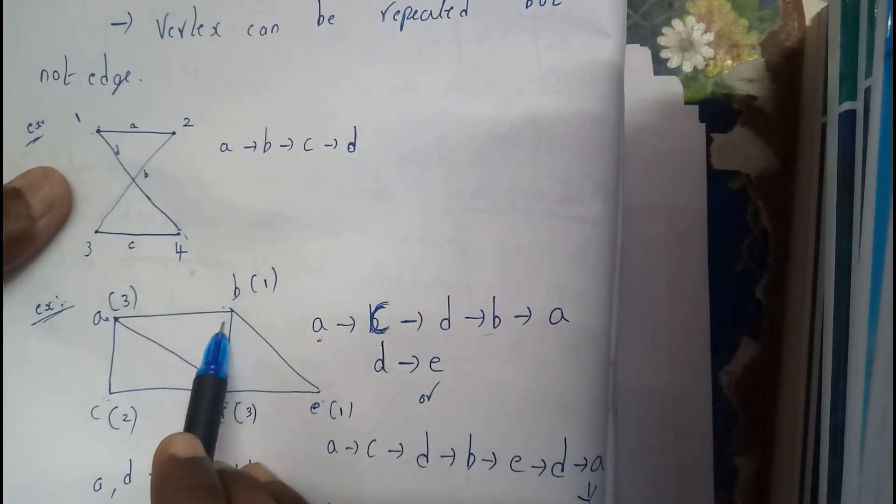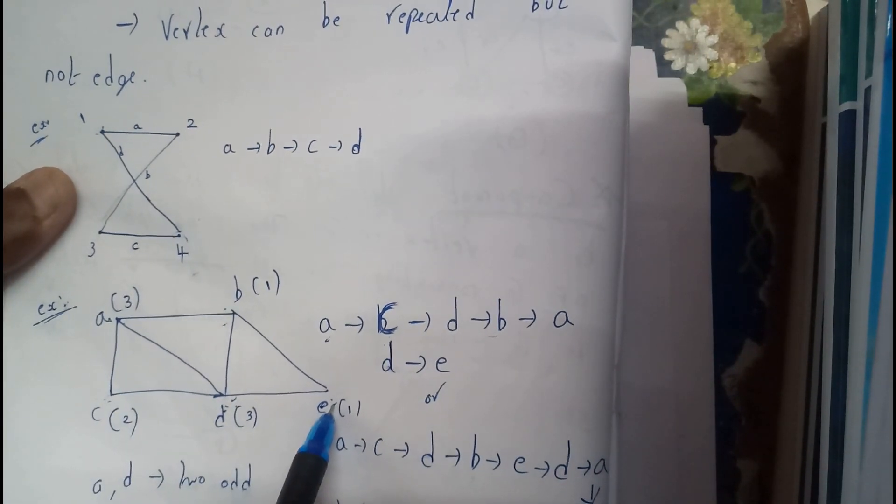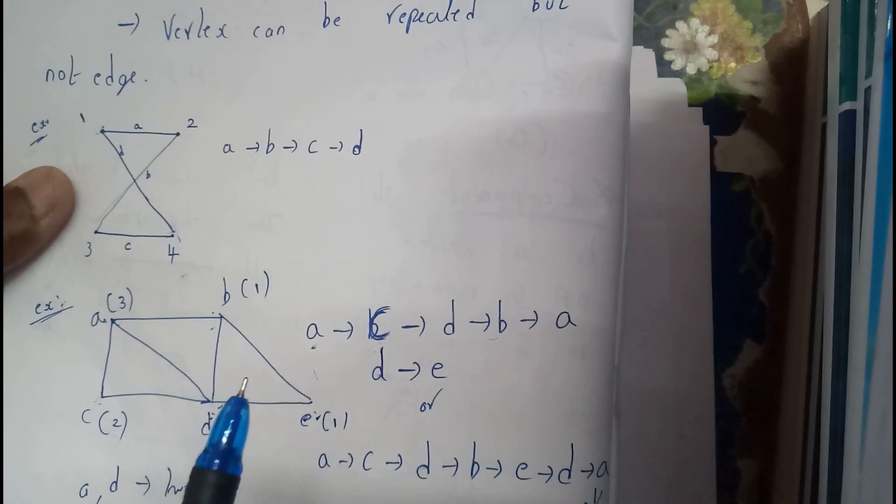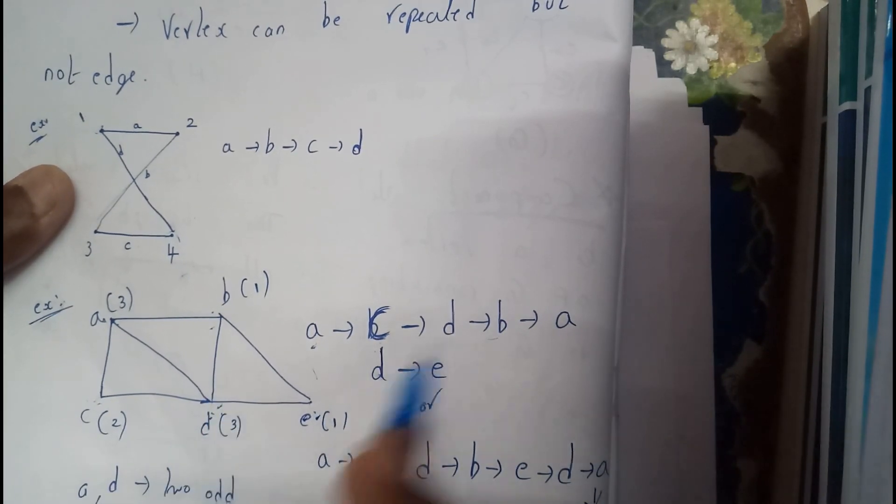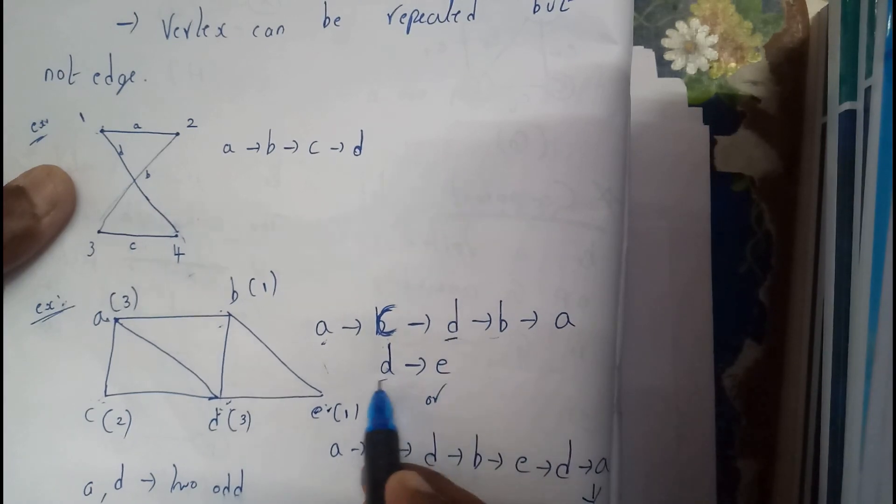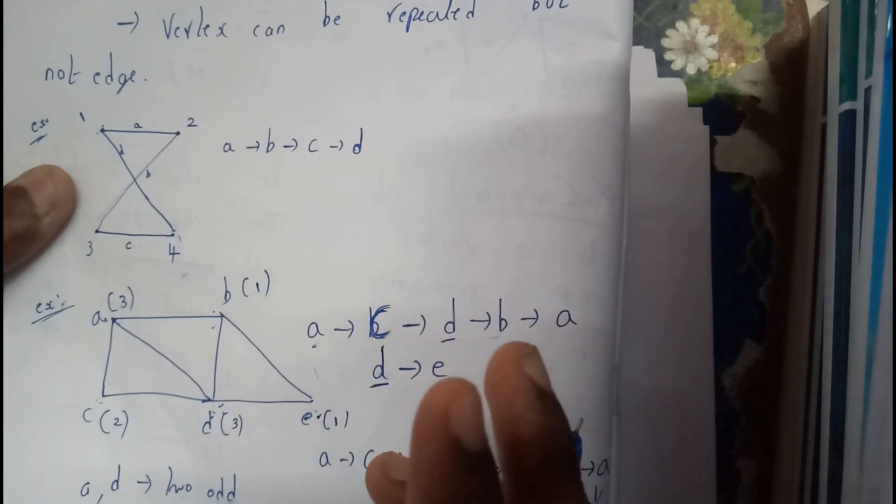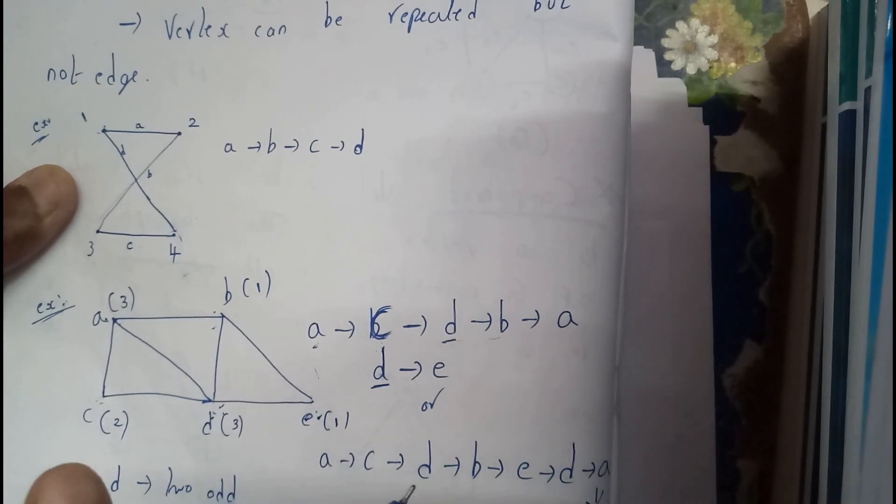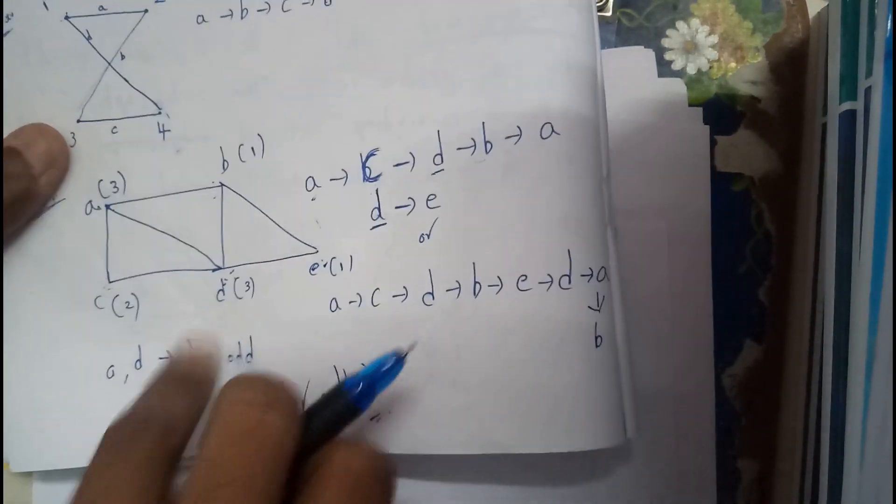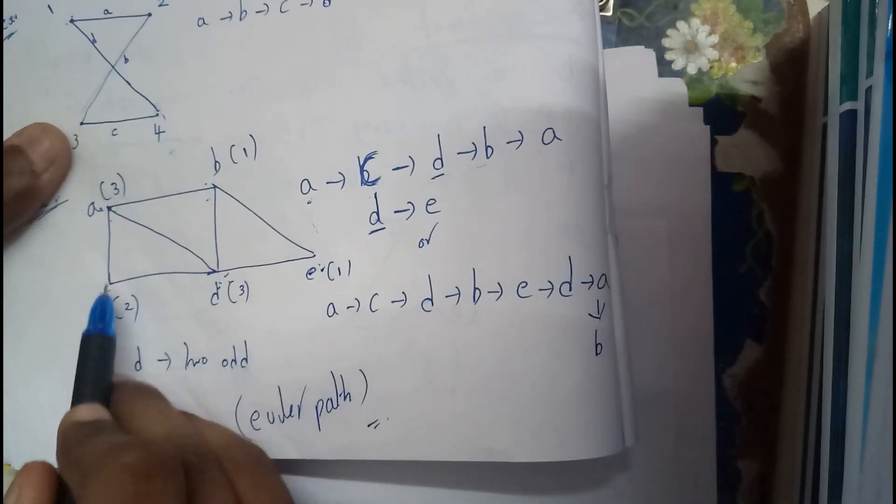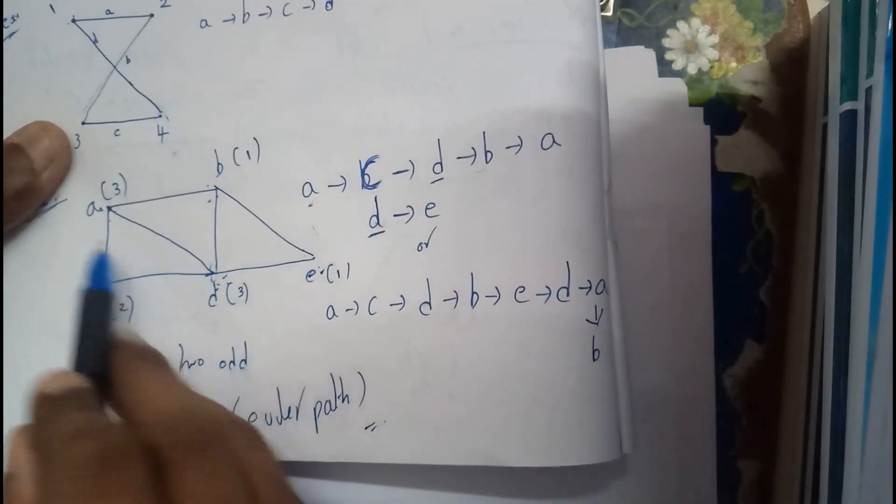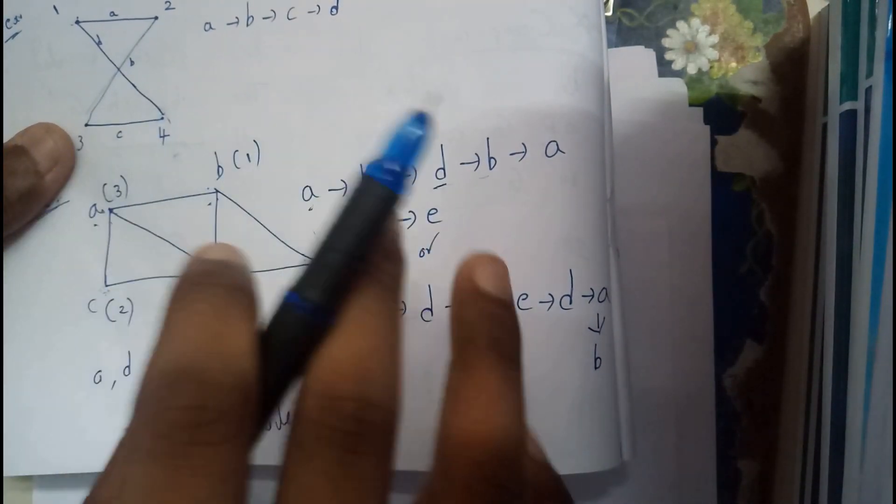Sorry, b to a, a to d, d to e. I traveled from all the edges and I repeated few of the vertices too. I repeated d, I visited d twice. That's fine, I should visit all the paths, that's the main idea. I can visit all these in another way also: a to c, c to d, d to b, b to e, e to d, d to a. There may be many number of paths.